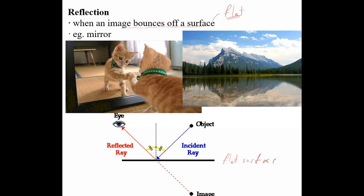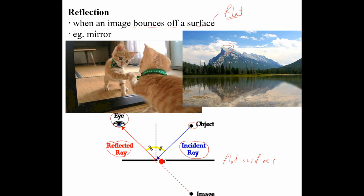Some language you need to understand: the incident ray or incident light is the light coming in from the object and bouncing off the reflective surface. In the mountain picture, the mountain is the object bouncing off the surface; for the cat picture, it's the collar bouncing off the mirror. From the reflective surface, the light goes back — in the case of Mount Rundle, reflecting off the surface and going into your eyes; for the cat, the collar reflecting off the mirror and going to the cat's eye. That reflected light is called the reflective light.